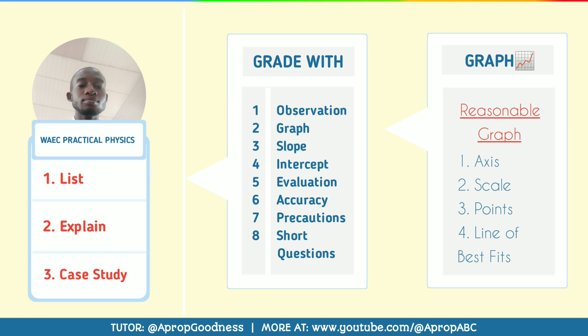Axis — you must make sure it is well distinguished. What should be on the Y axis should not be on the X axis. For example, if you have Z against Y, you must make sure Z is on the Y axis and Y is on the X axis. Scale means you must make sure the scale is appropriate. A good scale impresses the examiner and makes your work reasonable. A precise and good scale sells you out to the examiner, and it makes your work take up a large portion of the graph space.